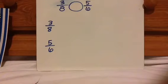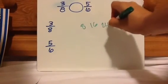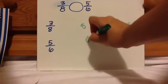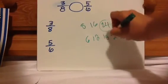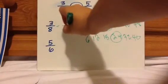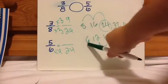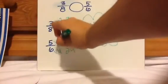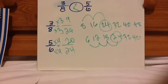Here's another one — press pause and then press play when you're ready. Step one, skip count by eights: eight, sixteen, twenty-four, thirty-two, forty, forty-eight. Skip count by sixes: six, twelve, eighteen, twenty-four, thirty-two, forty. Notice they both have twenty-four in common. This is times three because it's third in line; this is times four because it's fourth in line. So nine-twenty-fourths compared to twenty-twenty-fourths — twenty-twenty-fourths is larger, so five-sixths is larger.